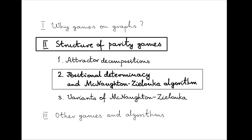Now that we have seen the concept of an attractor decomposition for graphs containing only even cycles, we have enough understanding of what makes winning strategies in parity games winning for player even to develop a proof of positional determinacy for parity games. That proof takes the form of an algorithm originally proposed for the more general case of Muller games by McNaughton, then instantiated to parity games and presented in a popular way by Zielonka.